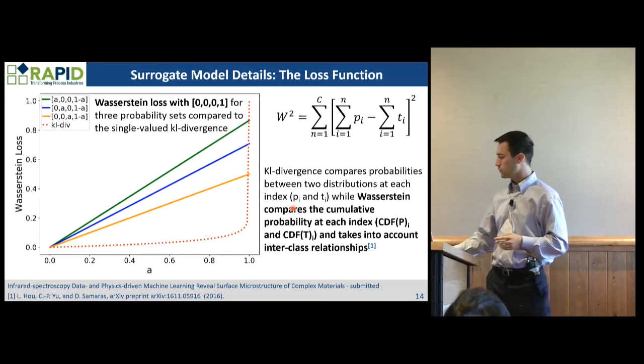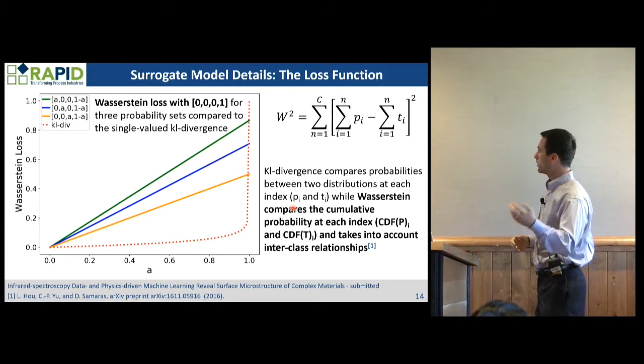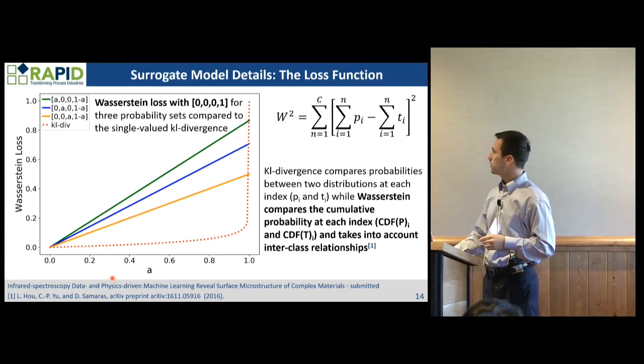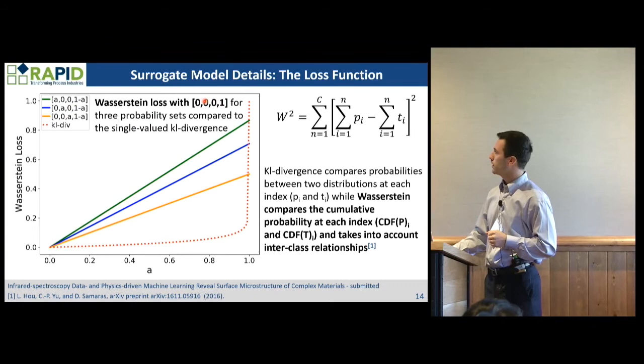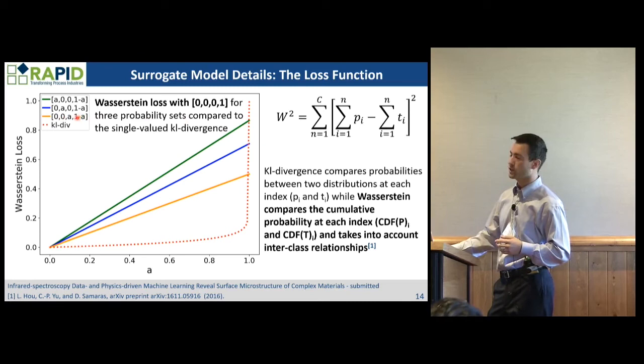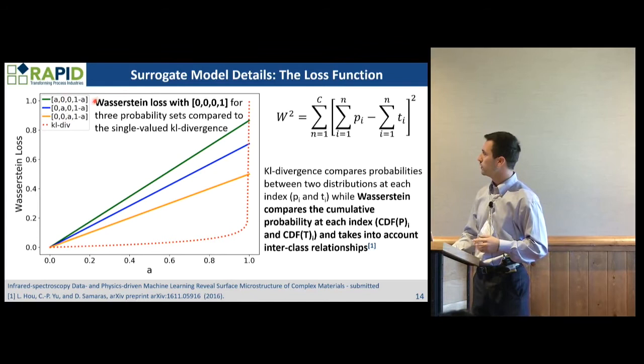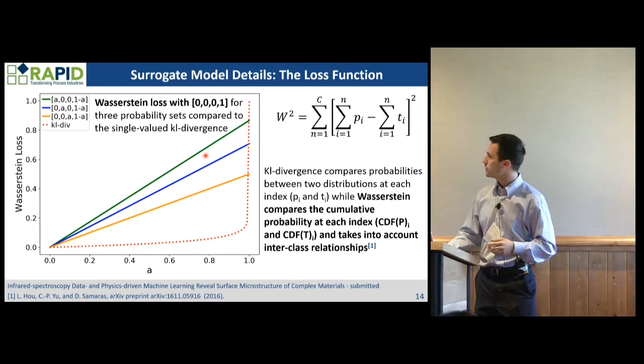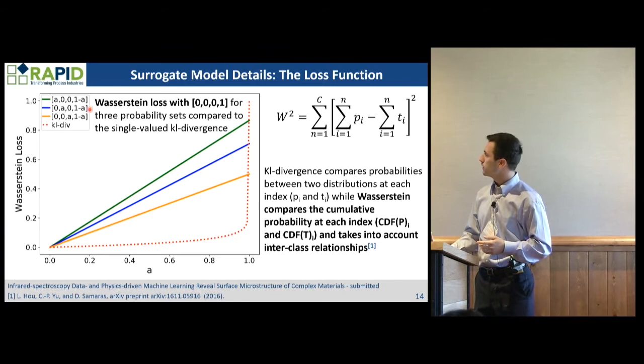Whereas KL divergence — which is typically used for multinomial regression — compares the distributions directly and can't account for inter-class relationships. Here's an example of what that means. We've implemented the first closed-form solution of this, which will help in future research. Basically, looking at the loss value versus parameter A, comparing three vectors against a reference vector, you can tell that the yellow vector is more similar based on the location of A — A is further away at the fourth index for the green case. The Wasserstein loss can capture this difference, whereas KL divergence and mean squared error treat the loss between all three vectors the same regardless of the position of A.